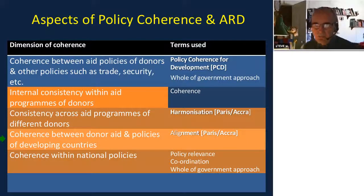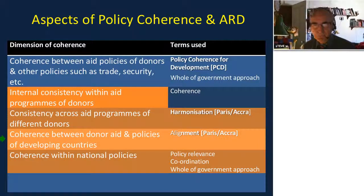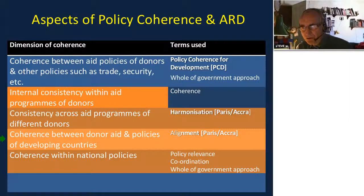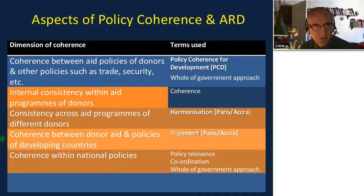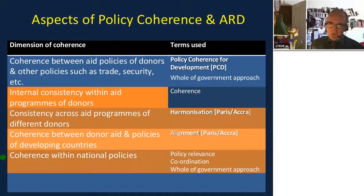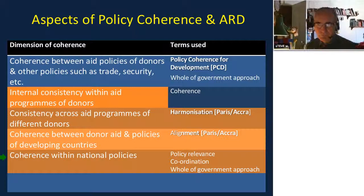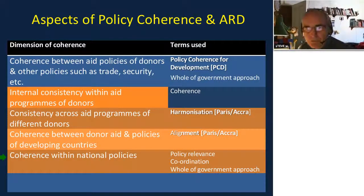There is also the coherence between what donor aid is doing and the policies of the developing countries we're partnering with — that is the scope for alignment of donor with national policies, another key part of the Paris Principles. And finally, there is coherence across different national policies — coordination or whole-of-government approaches at the level of the developing country.